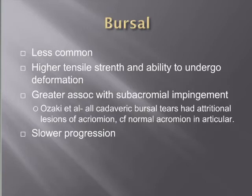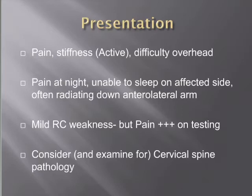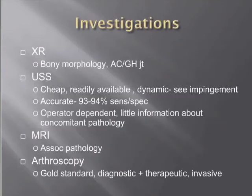Bursal-sided tears show slower progression, making expectant management and later surgery more reasonable. The presentation is similar to impingement, with pain as the prominent feature, often with a significant nocturnal component, difficulty sleeping, and pain radiating down the anterolateral arm toward the deltoid insertion. They may have mild rotator cuff weakness, but pain is the main feature. Because of the potentially radiating quality of pain, cervical spine pathology must be considered. Ultrasound is the mainstay of diagnosis, being cheap, readily available, and dynamic — allowing direct observation of impingement and subacromial bursal bunching.